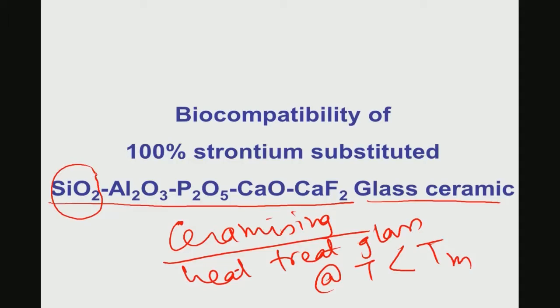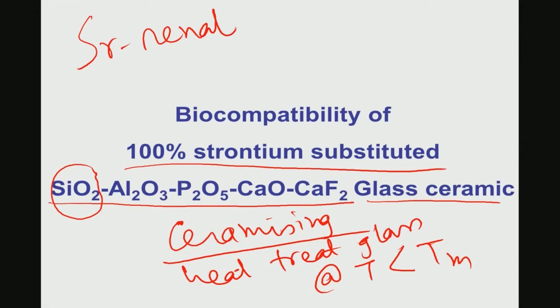Any specific composition may not be a glass forming composition — you need a composition with glass forming ability, like silica, for example, SiO2. This particular material also contains silica. The question is: why use strontium, and why 100% strontium substituted glass ceramics? Strontium, as mentioned in an earlier module, is found in strontium ranelate, which is one of the most commonly used drugs for osteoporosis treatment.